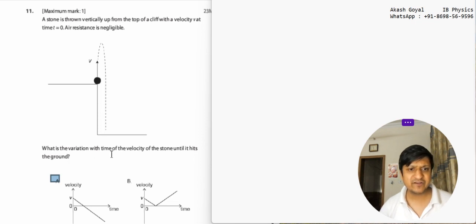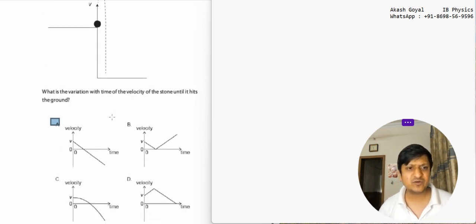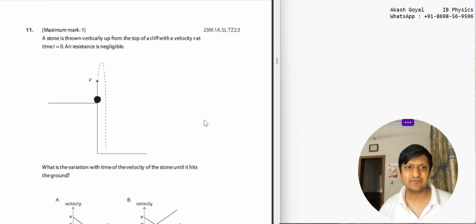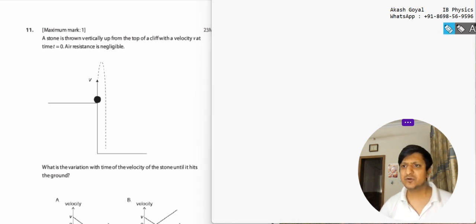What is the variation with time of the velocity of the stone until it hits the ground? Basically in this question we have to draw the Vt graph for this motion. So, first understand what's happening.